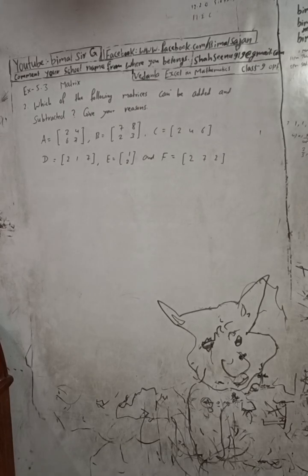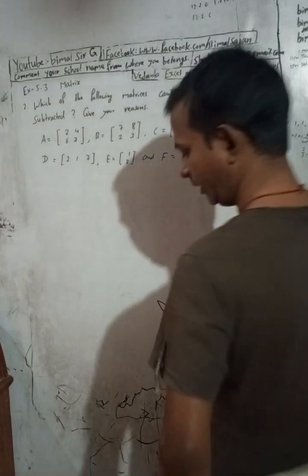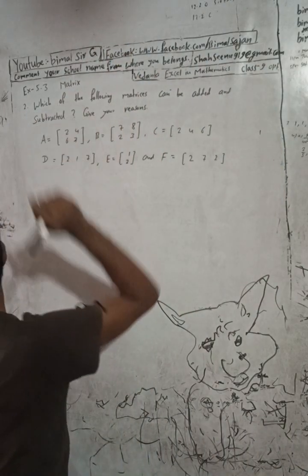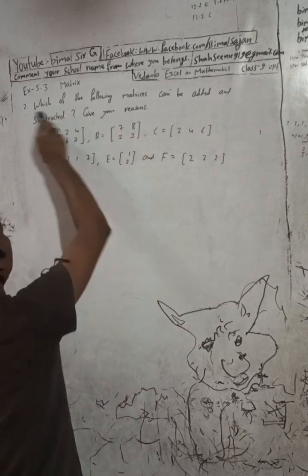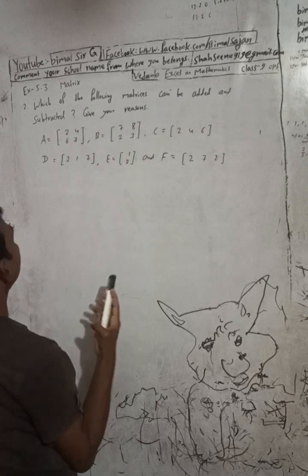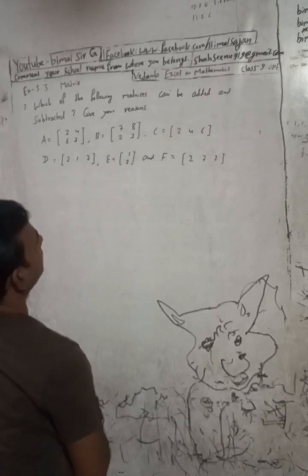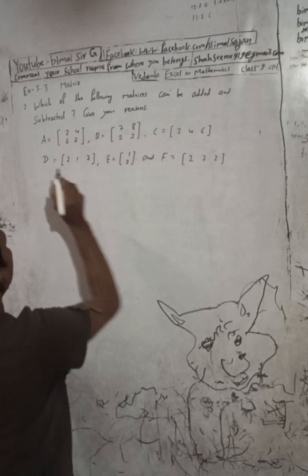Hi class 9 and 10 students, welcome back to Bimal Sarji's YouTube channel. This is question number two, exercise 5.3, matrix chapter in mathematics optional. Don't forget to check the playlist — you will get a lot of examples there. The question is: which of the following matrices can be added and subtracted? Give your reason. Here matrices A, B, C, D, E, and F are given.